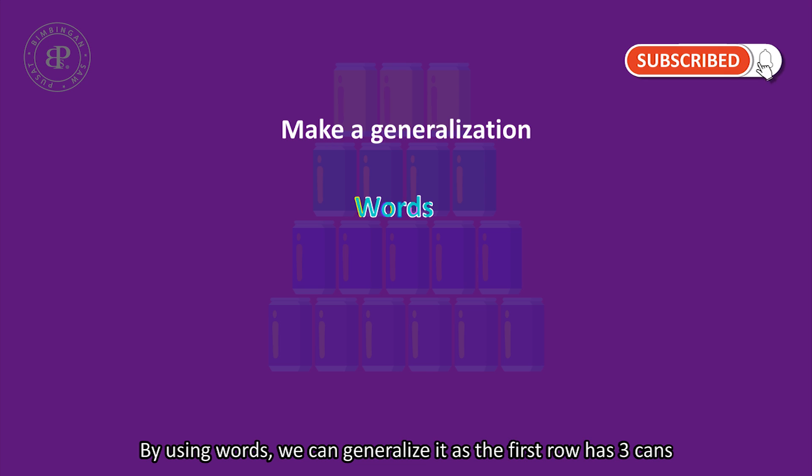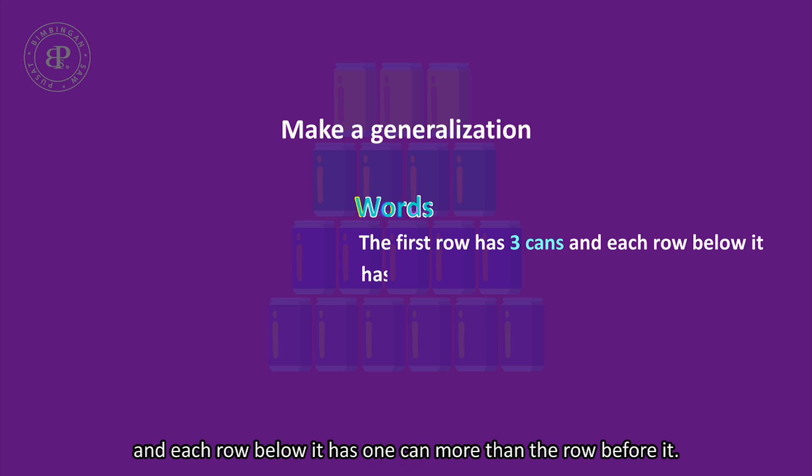By using words, we can generalize it as the first row has 3 cans and each row below it has 1 can more than the row before it.